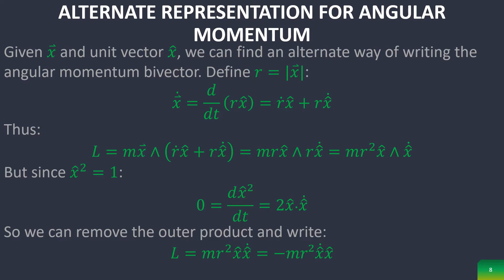We can represent it a little bit differently if we consider the unit vector x-hat and the normal vector x. If we define r as the magnitude of x, then we can define time derivative of x as this right here, which leads us to this representation. And since x-hat squared is equal to 1, because it's a unit vector, you can see that the derivative of the dot product is equal to 0, which means that we can just remove the outer product and simplify it as this, which is a much more simplified equation. It's a lot easier to compute than the previous equation.